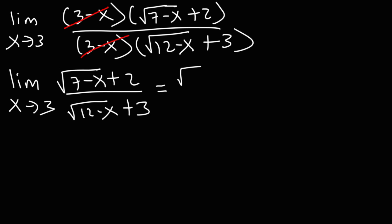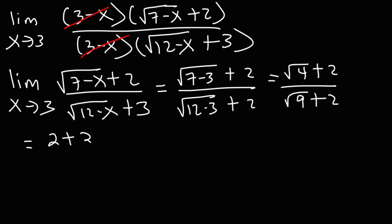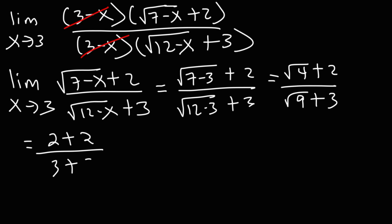So this is going to be the square root of 7 minus 3, plus 2, divided by the square root of 12 minus 3, plus 3. Now 7 minus 3 is 4, and 12 minus 3 is 9. The square root of 9 is 3 — I made a mistake earlier where I wrote 9 instead of 3. So we have the square root of 4 plus 2 and the square root of 9 plus 3, giving us 2 plus 2 is 4, and 3 plus 3 is 6.